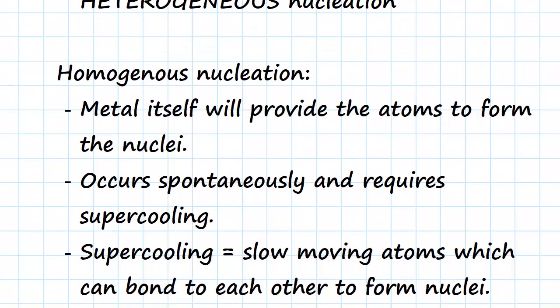Homogeneous nucleation is when the metal itself will provide the atoms to form the nuclei. This occurs spontaneously and requires supercooling. It's a spontaneous random act, and it's less common, but it's a simpler form. Homogeneous nucleation is the simpler form of the two because the metal itself will provide the atoms to form the nuclei.